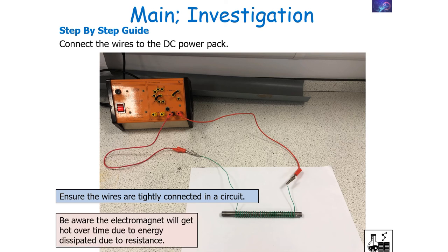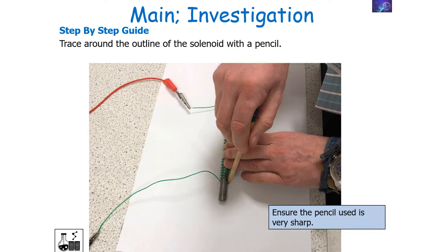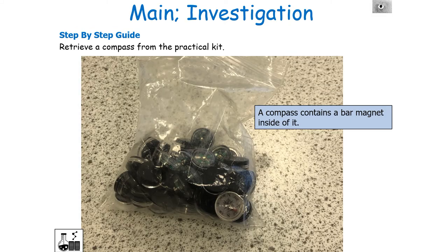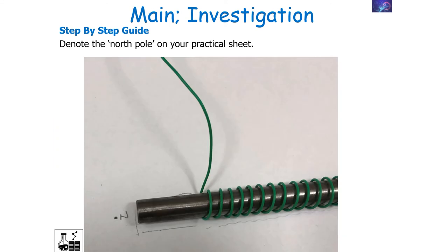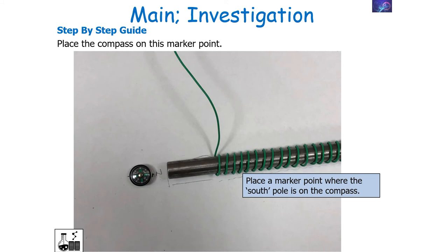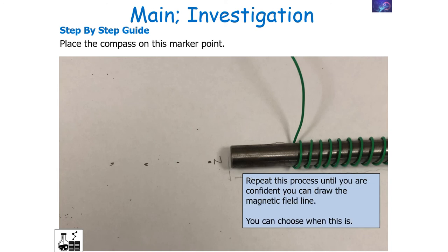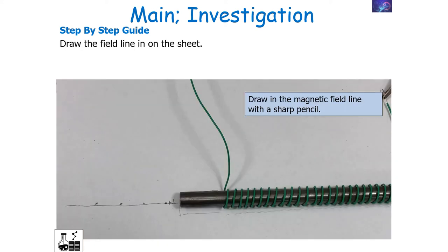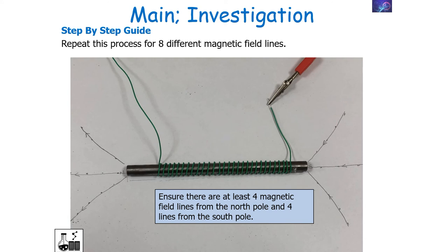Be aware that over time an electromagnet will get hot due to energy dissipated by resistance, so always turn it off when not in use — it may buzz and give off a slight smell, which is normal. To map the field: place a marker next to the north pole, put the compass on that mark, then place a further mark where the south pole of the compass points. Move the compass to that new mark and repeat the process until you can draw a complete magnetic field line, then draw it with a sharp pencil and add an arrow showing the direction of the field line.